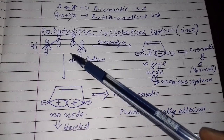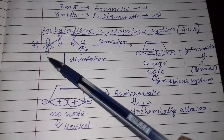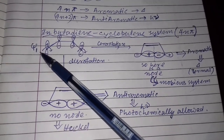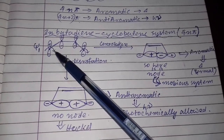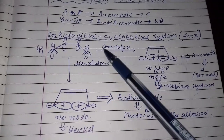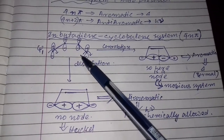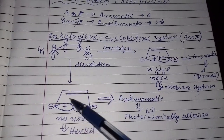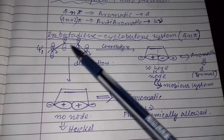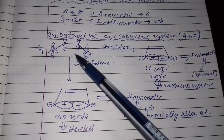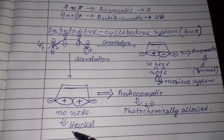Now for the disrotatory process: if we disrotate, this orbital moves one way and this orbital moves the other way. So the positive lobe comes to positive and the positive comes to positive — there is no node present.